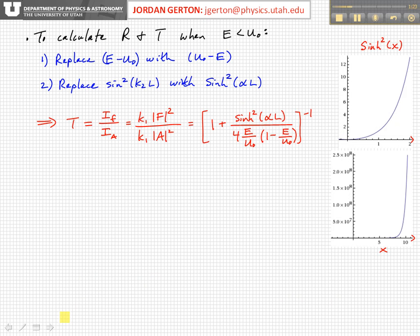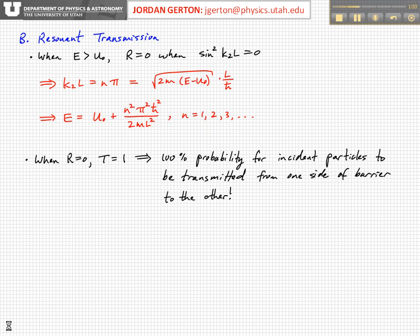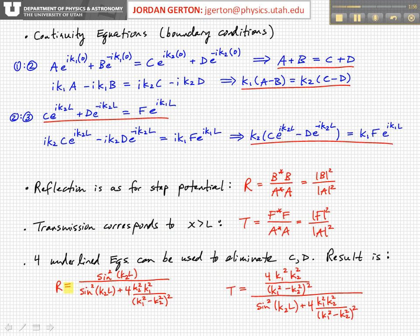Well, we're not going to calculate them, but I'm going to give it to you. So let's calculate R and T when the energy is less than the potential height. In order to see how you would do this in a reasonably simple way, we realize that we can replace E, wherever we see E minus U₀ in the reflection, the general reflection and transmission coefficients that we wrote back here.